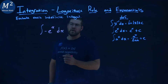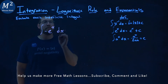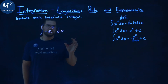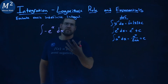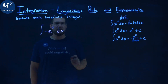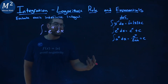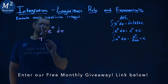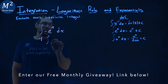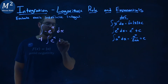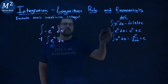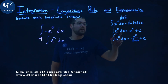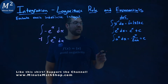We're given this problem right here: the integral of negative e to the x power dx, and we're going to find this indefinite integral. We have our definitions, and we have to rewrite this to look like one of our definitions — the second one looks pretty close. I know I can pull the negative outside of my integral as a constant. So we have a negative 1 pulled out, and then we're left with the integral of e to the x power dx. The definition says the integral of e to the x dx is equal to e to the x plus c.